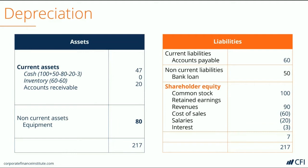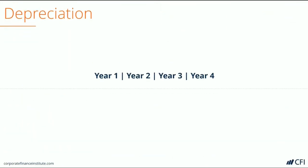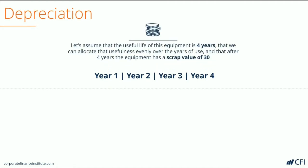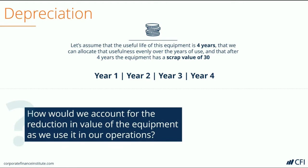Now let's cover Depreciation Expense. Recall from our Balance Sheet example that we purchased equipment of 80. This equipment was recorded as a non-current asset under the heading Property, Plant and Equipment. Let's assume that the useful life of this equipment is 4 years, and that we could allocate the usefulness of this equipment evenly over 4 years. Additionally, at the end of the 4 years it will have a scrap value or salvage value of 30. The question now is: how would we account for the reduction in value of the equipment as it's used in our operations?